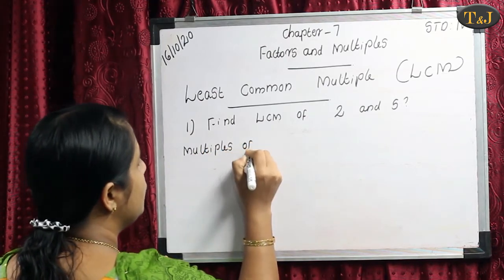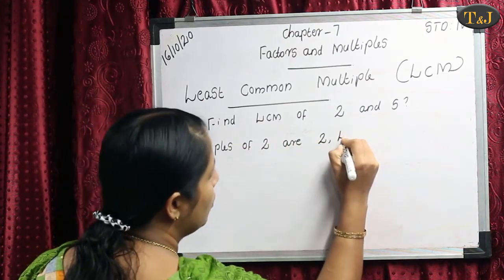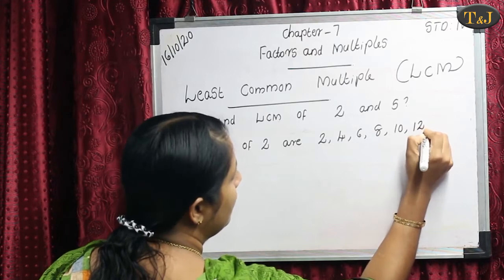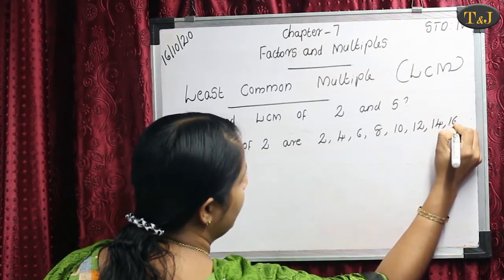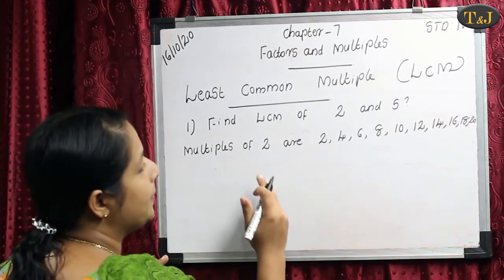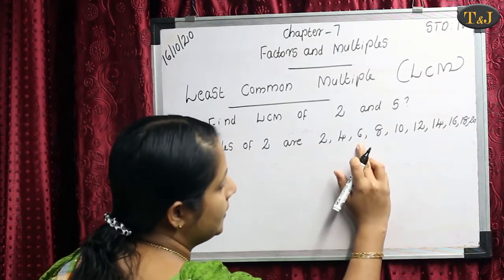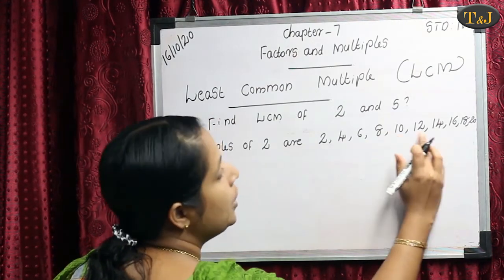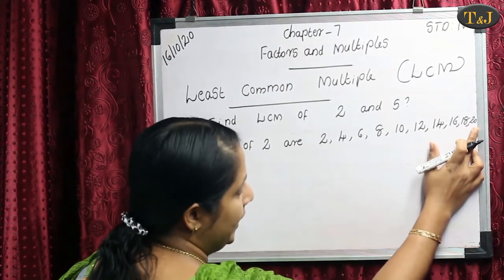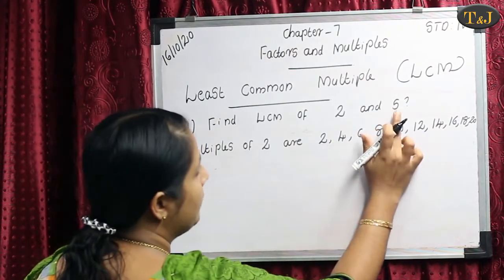Multiples of 2 are: 2, 4, 6, 8, 10, 12, 14, 16, 18, 20. First we write the 10 multiples of 2: 2×1=2, 2×2=4, 2×3=6, 2×4=8, 2×5=10, 2×6=12, 2×7=14, 2×8=16, 2×9=18, 2×10=20. These are the first 10 multiples of the number 2.